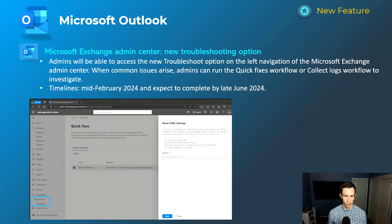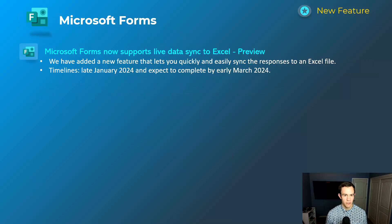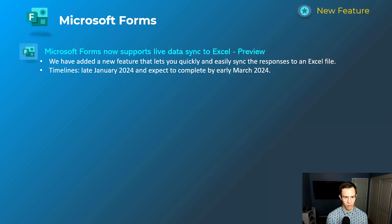This rollout is mid-February, complete by late June. Next is Microsoft Forms — a new feature supporting live data sync to Excel. Previously, you could export survey results into an Excel sheet, but that was a one-time capture you had to redo as more results came in. Now you can spin up an Excel sheet, attach it to the form upon creation as a live working document you can monitor over time. This will happen late January, complete by early March.